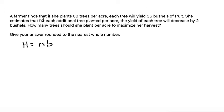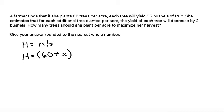We also know that for each additional tree planted per acre the yield will decrease by two bushels. So the harvest equals (60 + x) where x is the number of trees added over 60, times the bushels per tree. We start with a base of 35 bushels, then subtract 2 bushels for each additional tree added, giving us (35 - 2x).